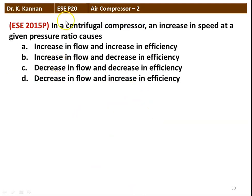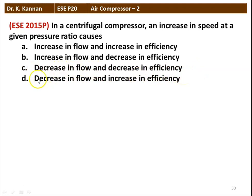The next question, again from the 2015 question paper. In a centrifugal compressor, an increase in speed at a given pressure ratio causes: increase in flow and increase in efficiency; increase in flow and decrease in efficiency; decrease in flow and decrease in efficiency; or decrease in flow and increase in efficiency. The correct answer is: increasing the speed will increase the flow rate but decrease the efficiency in a centrifugal compressor.